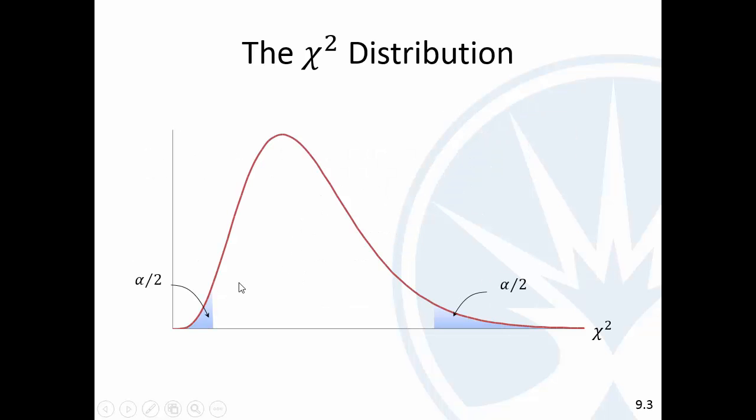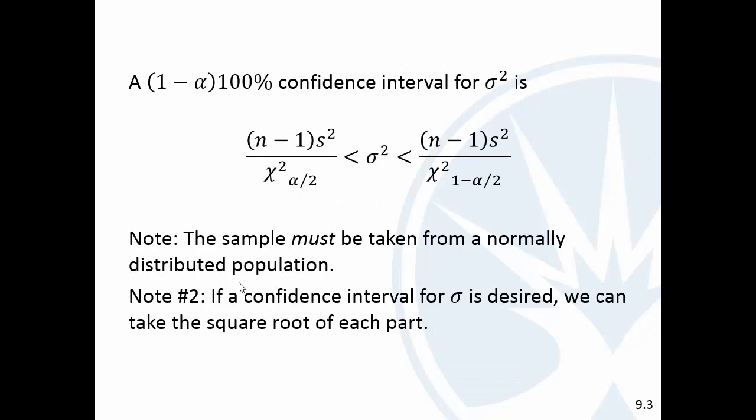The requirement is different now. Now the sample has to be taken from a normally distributed population. So if your population is not normally distributed, you can't do this confidence interval for sigma squared.